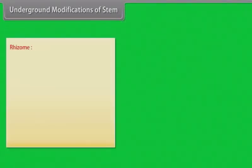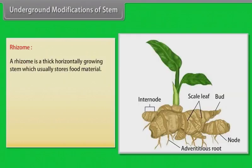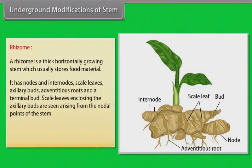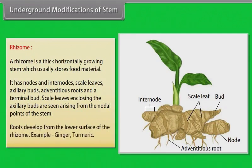Rhizome is a thick, horizontally growing stem which usually stores food material. It has nodes and internodes, scale leaves, axillary buds, adventitious roots and a terminal bud. Scale leaves enclosing the axillary buds are seen arising from the nodal points of the stem. Roots develop from the lower surface of the rhizome. Examples: ginger, turmeric.